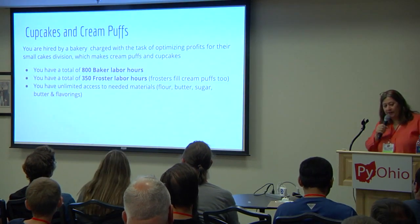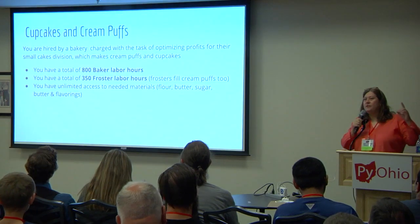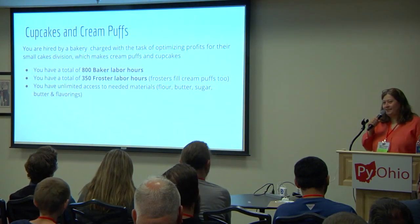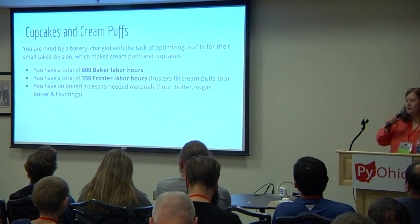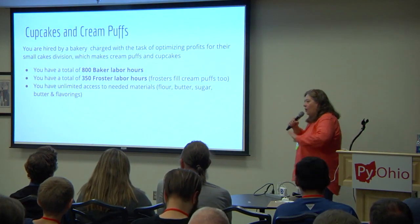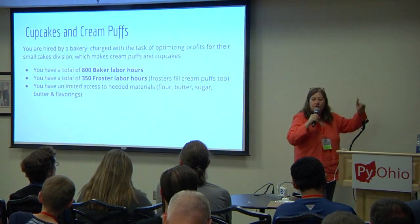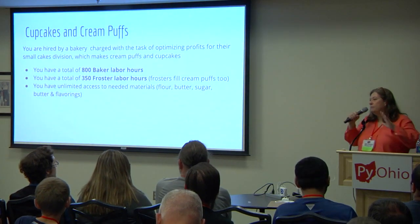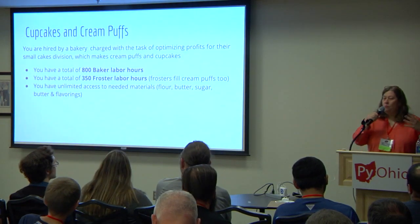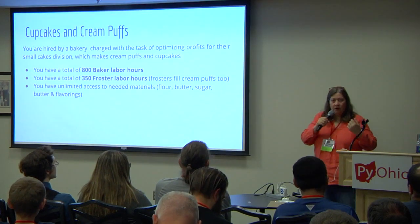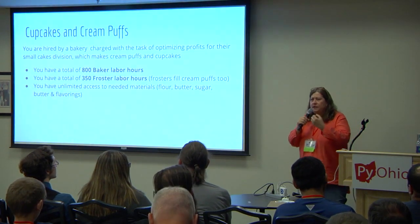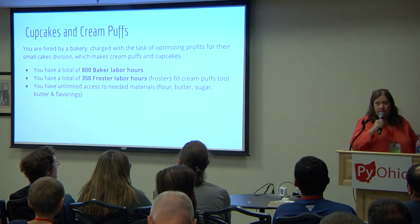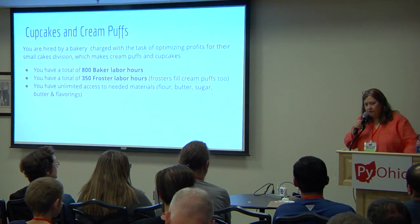We are hired by a bakery charged with the task of optimizing profits for their small cakes division. You are given some constraints: you have all the materials you want — all the flour, butter, all that stuff — but you have 800 baker hours and 350 froster hours, and that's all you have to make the most profit you possibly can. We're assuming here that the more you make, the more you sell. There are of course finite limits based on shelf space and demand in the real world.